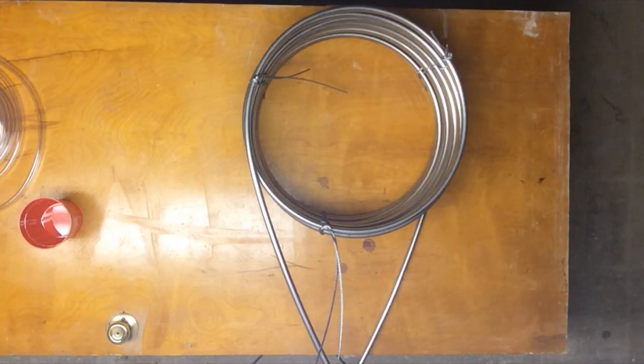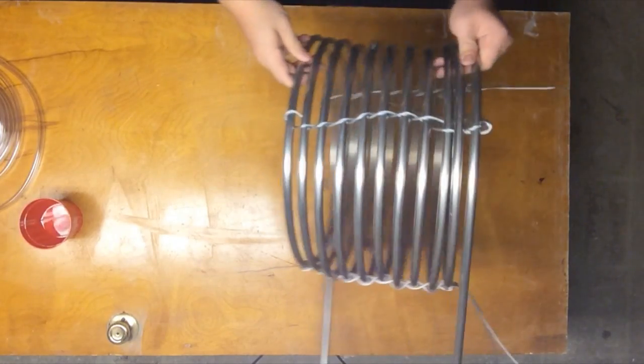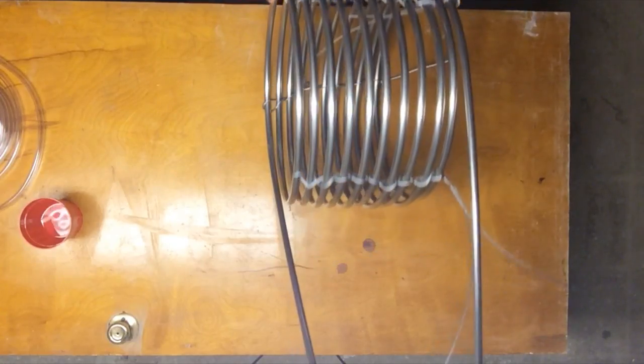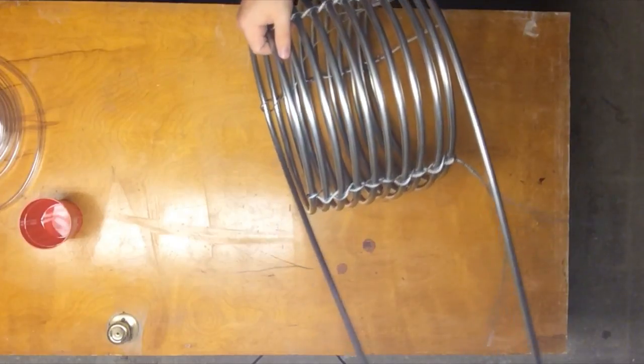Next what I did is I got some steel wire and I wove this in between each coil to sort of space it out a bit. This will help keep the bonfire together inside the coil, allow for some convective heat transfer and also provide more oxygen to the fire.